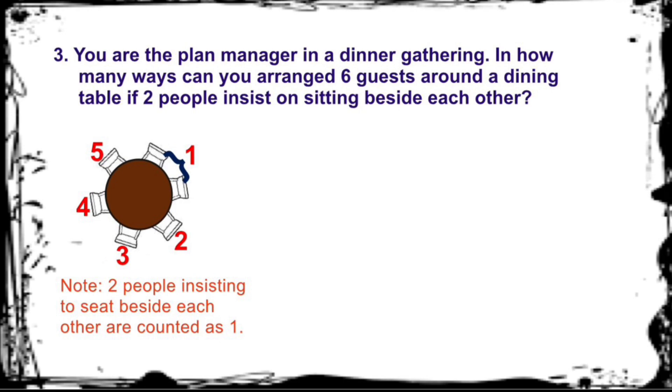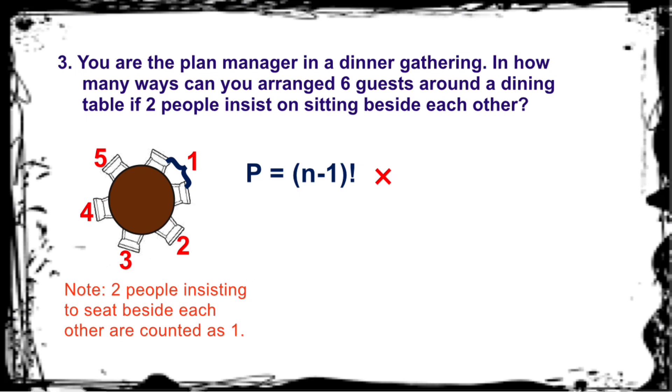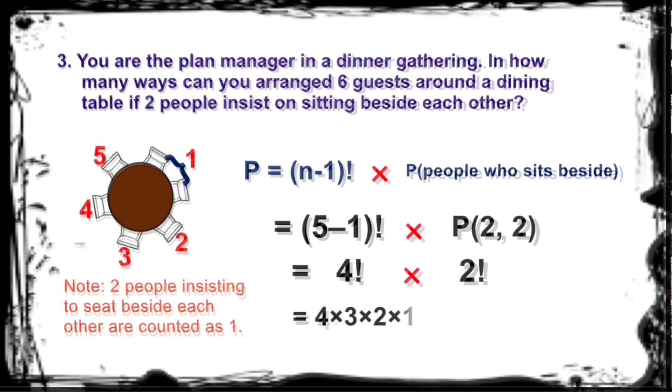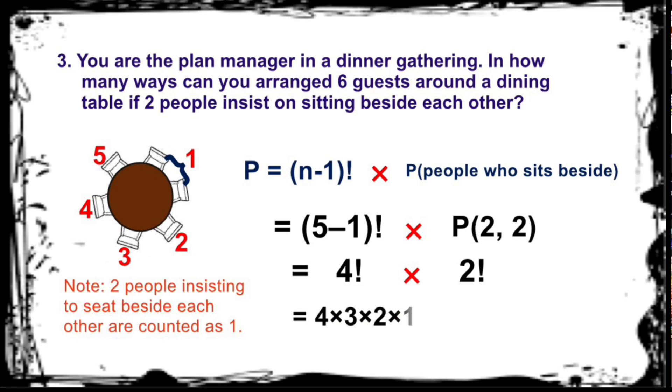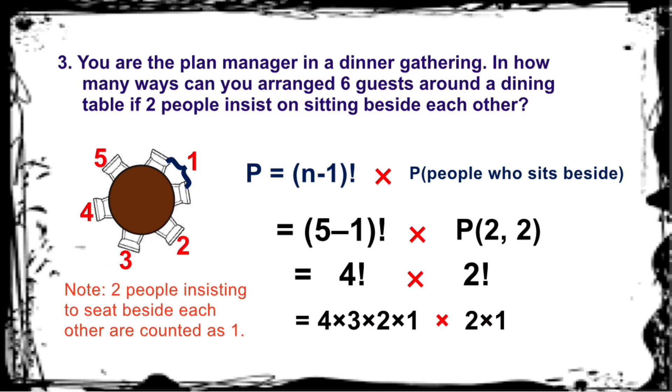For the formula, did you use these two? Great. That's five minus one factorial times permutation of two taken two equals four factorial times two factorial. Then four factorial is four times three times two times one. Two factorial is two times one. So, that is equal to 48.